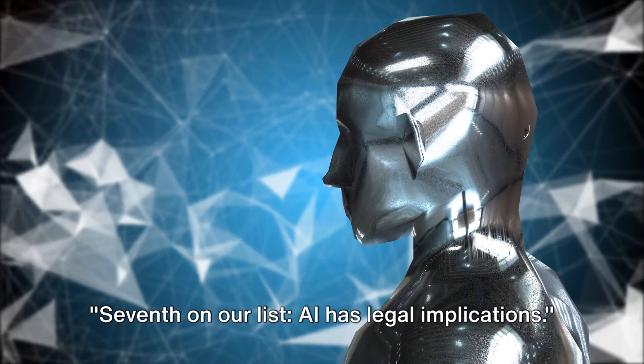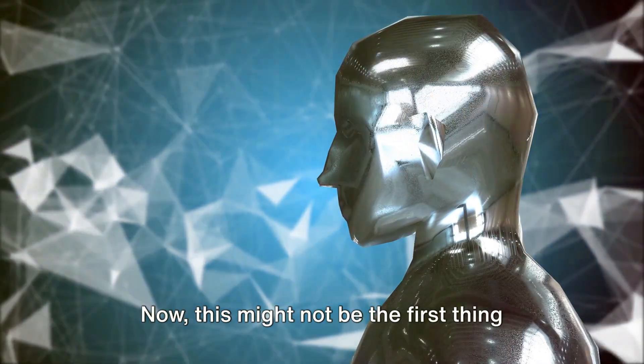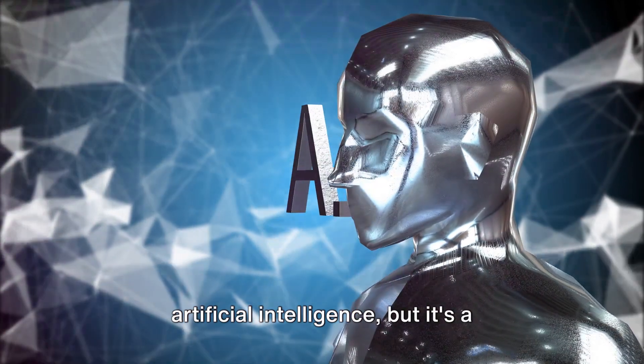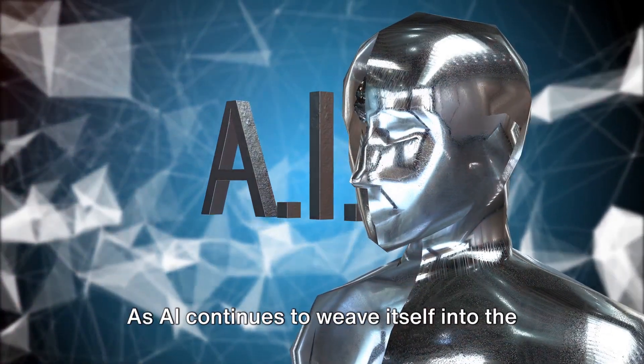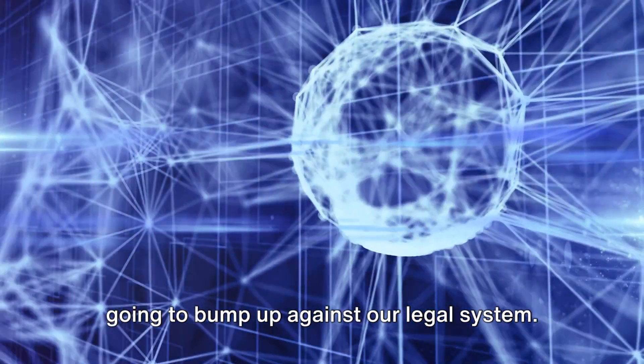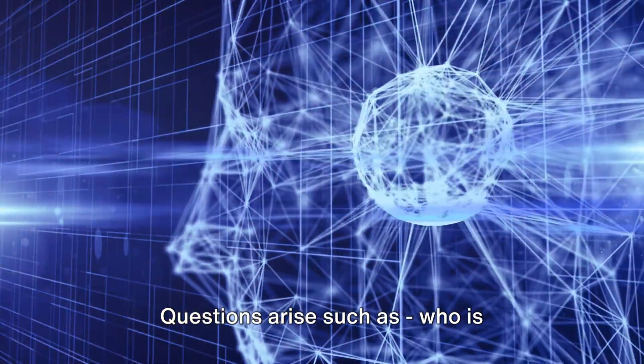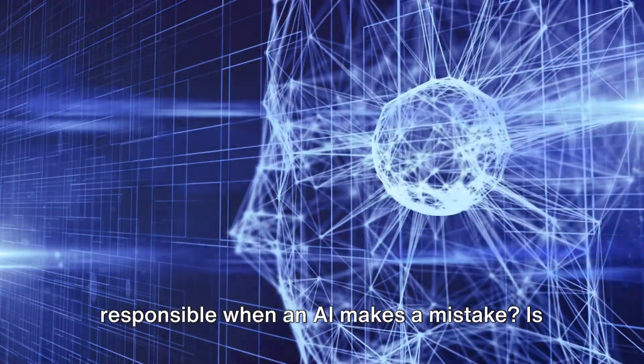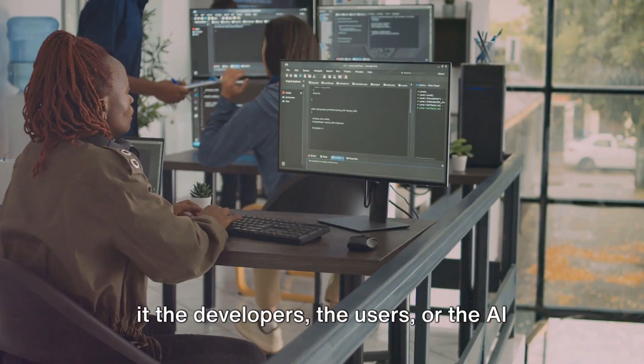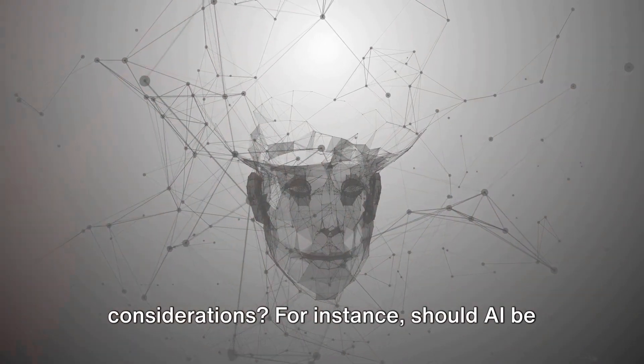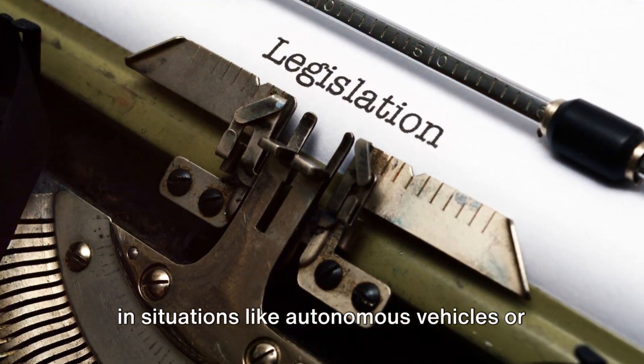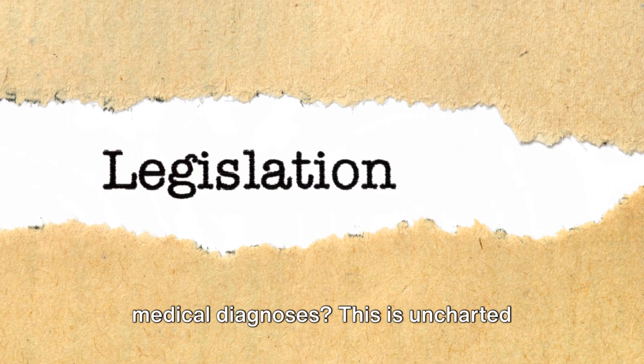Seventh on our list, AI has legal implications. Now this might not be the first thing that pops into your mind when you think of artificial intelligence, but it's a crucial aspect that needs to be addressed. As AI continues to weave itself into the fabric of our daily lives, it's inevitably going to bump up against our legal system. Questions arise such as, who is responsible when an AI makes a mistake? Is it the developers, the users, or the AI itself? And what about ethical considerations? For instance, should AI be allowed to make life and death decisions in situations like autonomous vehicles or medical diagnoses?